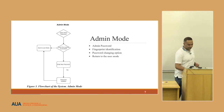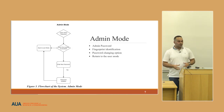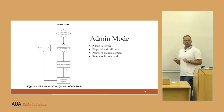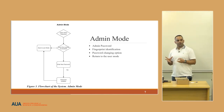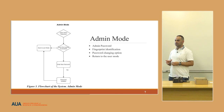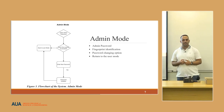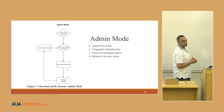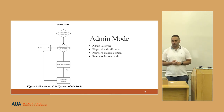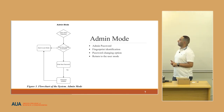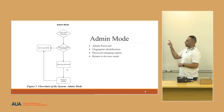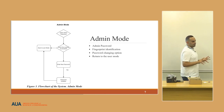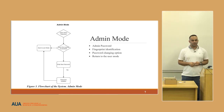The admin mode is a VIP mode which allows the owner to change the password. In case the owner forgot the old password, all the admin must do is remember the admin password, enter it, and identify the fingerprint. In case of wrong identification, it automatically goes back to user mode. Otherwise, the owner enters the new password and it gets updated.